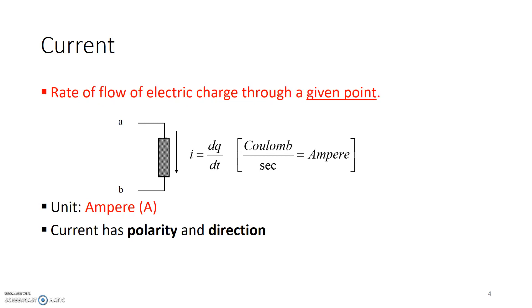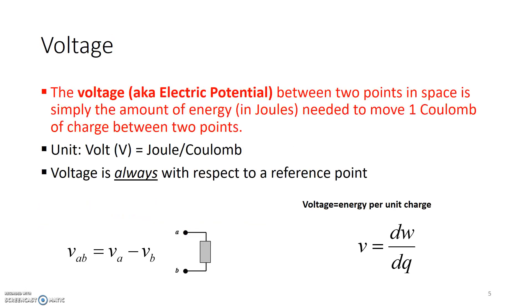Now, the next thing that we want to talk about in terms of circuit quantities is called voltage or the electrical potential. The voltage is electrical potential between two points in space, and it's basically the amount of energy that is required to move one coulomb of charge from point A to point B. The unit of voltage is joules per coulomb, and it's written as volt or simply V.